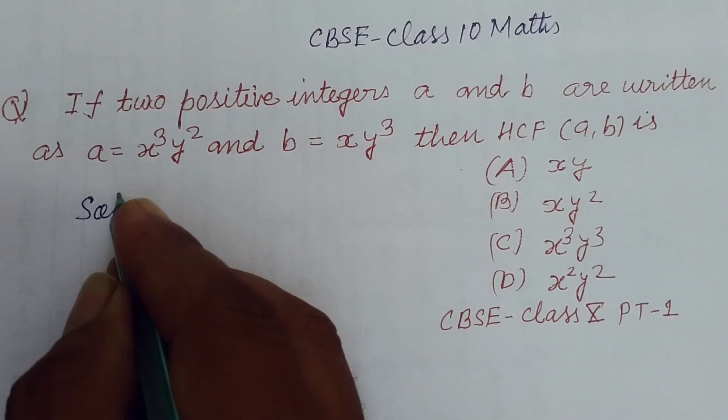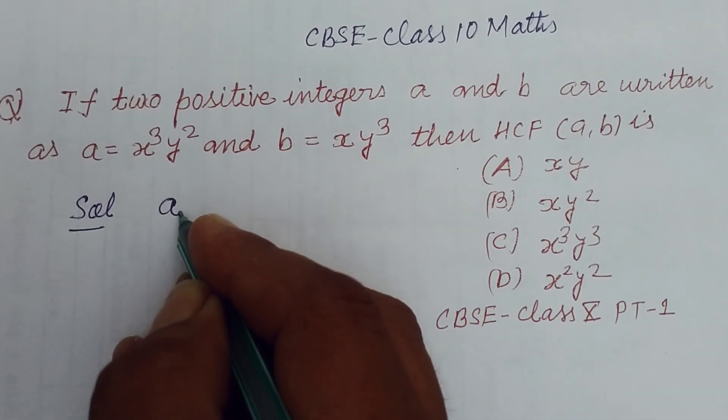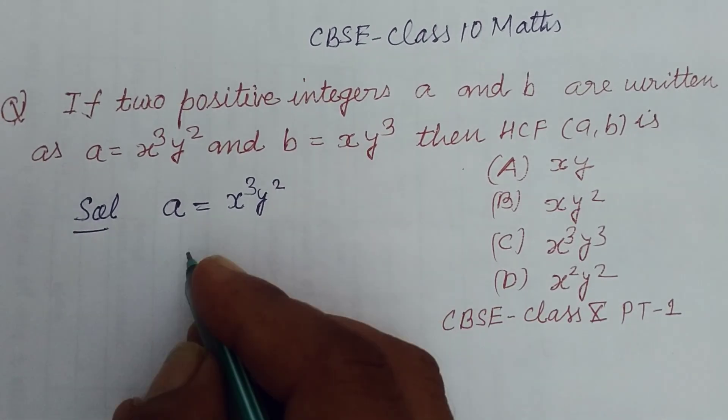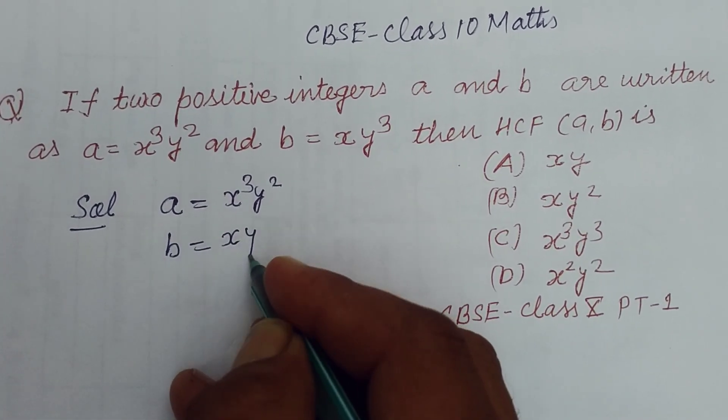So students, we have a which is equal to x³y² and b which is equal to xy³.